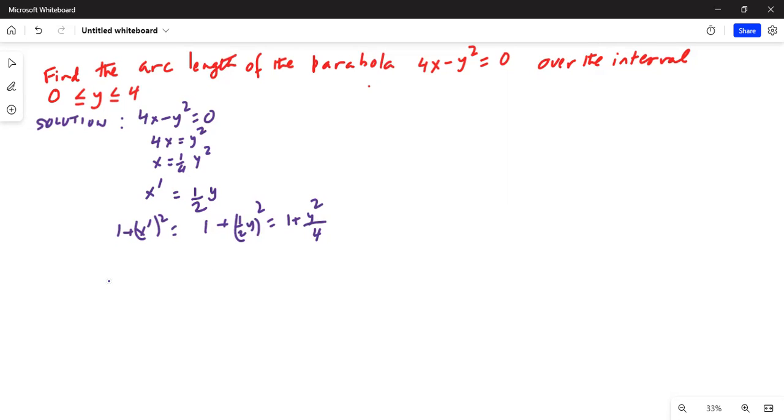Now the length of the arc is given by the formula: S equals the integral from 0 to 4 of the square root of 1 plus x prime squared with respect to y, which equals the integral from 0 to 4 of the square root of y squared over 4, the whole thing integrated with respect to dy.